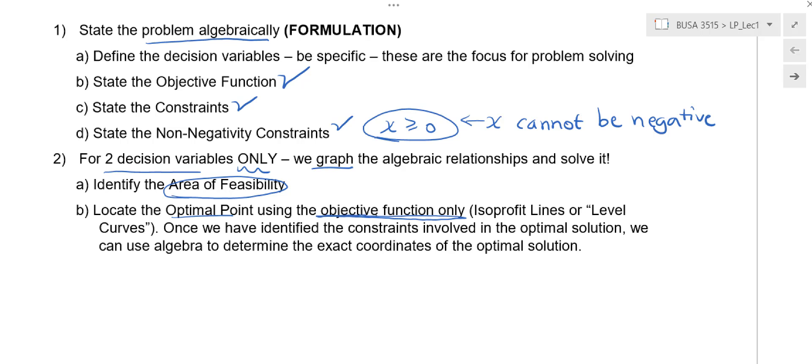And what we do with the objective function to find the optimal points is we do what are called level curves or isoprofit lines, if we're talking about profit, where you have the function having a certain constant value for each line. So for these level curves, each line represents a constant value for the objective function.